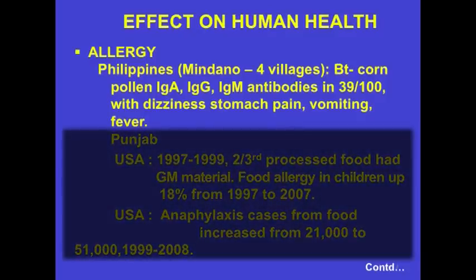On the effect on human health, it's very difficult to do studies, so these are really inferences drawn from the evidence we have. There's an enormous number of cases of allergy. In the Philippines, in Dano, in four villages, IgA, IgG, and IgM antibodies specific for Bt corn—genetically engineered corn—were found in 39 out of 100 people presenting with dizziness, stomach pain, vomiting, and fever. This is an established case.